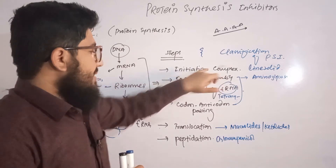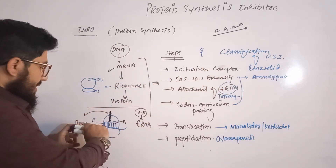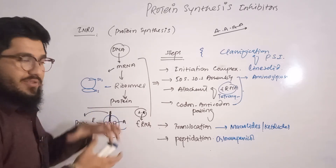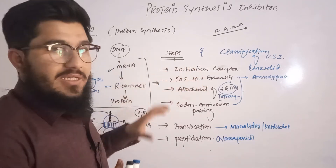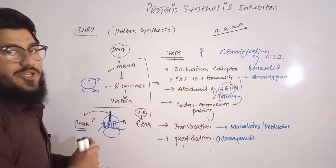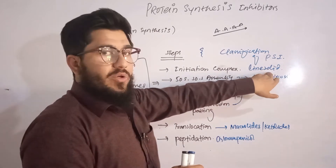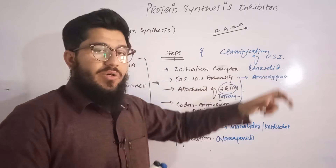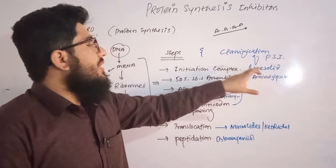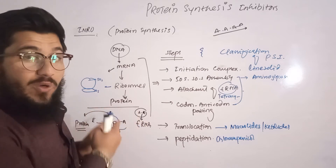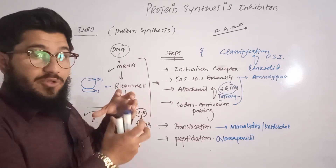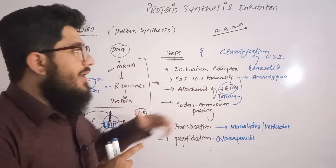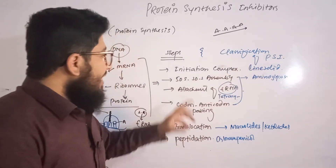The initiation complex — where messenger RNA gets attached with the 30S and 50S units — is inhibited by linezolid. So if anyone asks about the mechanism of action of linezolid, it inhibits the initiation complex, where the ribosomal subunits and the messenger RNA are uniting.